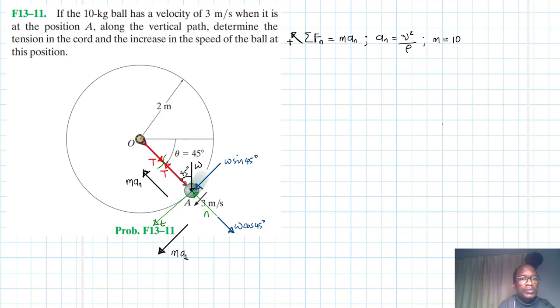We have m equal to 10 kg, so let's apply the equation. In this direction we do have T, that's our T. So we're going to have T minus W cos 45 equal to m a_n. Therefore our T is just going to be equal to m a_n which is just v squared divided by rho, and our rho here is just equal to 2 meters.